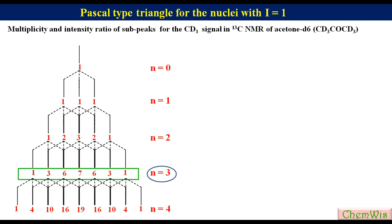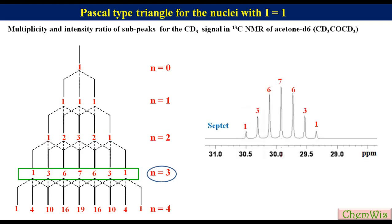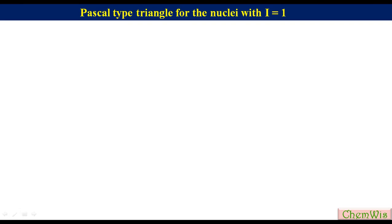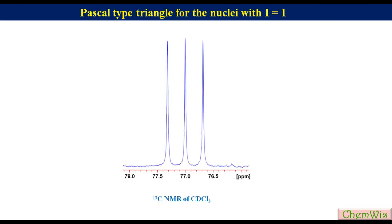In the original 13C NMR spectrum, the CD3 signal is seen as a triplet with a 1:1:1 intensity ratio of sub-peaks, because 13C is coupled to 1 deuterium which has i = 1.